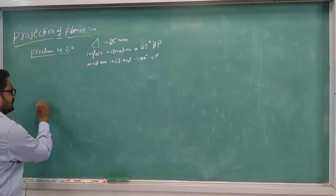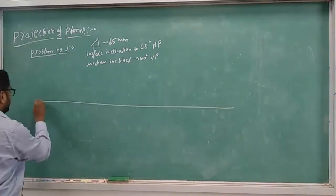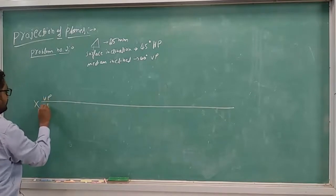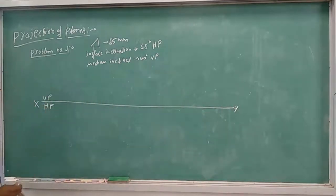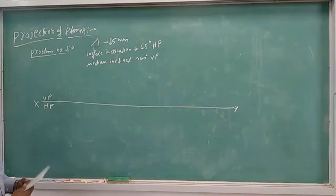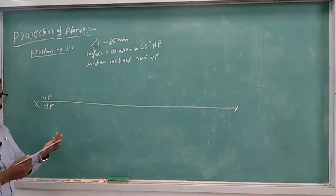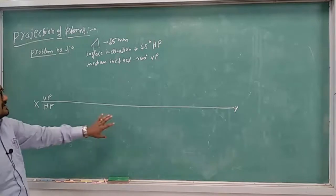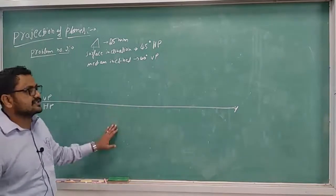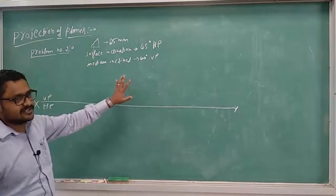Let me discuss how this should be done. First we will draw the XY line with VP and HP. All plane problems are solved in the first quadrant, so VP will come above the XY line and HP will come below the XY line. The problem will be solved in three steps: the first step is the resting condition, the second step is the surface inclination, and the last step is the edge or median inclination.